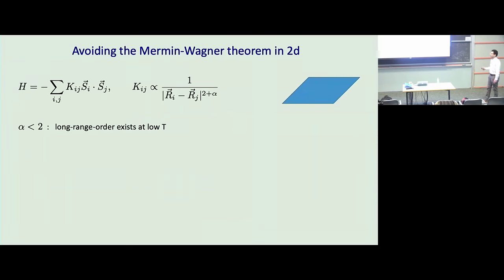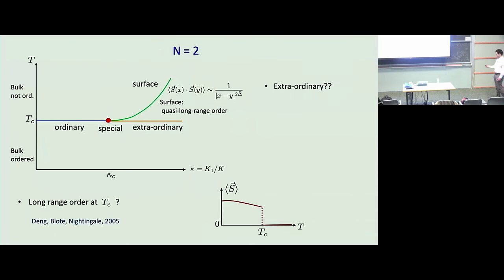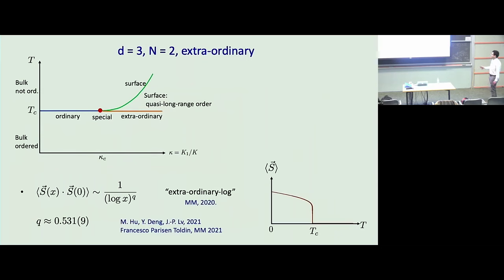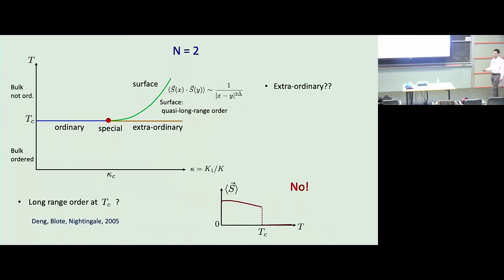If you take a strictly two-dimensional system with power-law interactions that decay slowly enough, long-range order for a continuous symmetry can exist at low enough temperature. Does this happen here? It turns out no — you don't get long-range order on the surface at the bulk critical temperature, but you get very close. Along the extraordinary line the spin-spin correlation function decays as a power of the logarithm of separation, and this power is universal. The correlation goes to zero, but extremely slowly — which explains why early numerics misinterpreted it as long-range order.